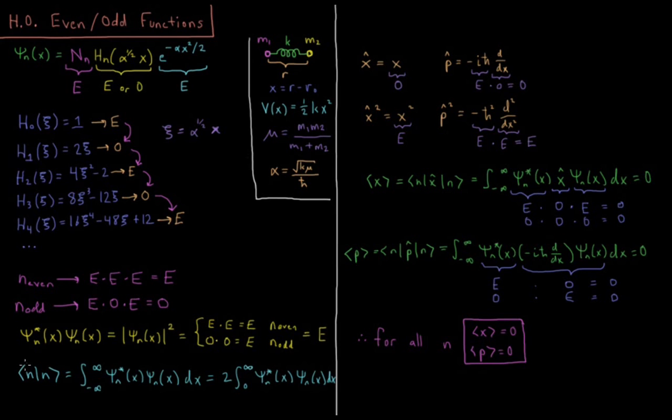So our normalization integral for any of these harmonic oscillator wave functions, the integral from minus infinity to infinity, psi star of n times psi n dx is equal to 2 times the integral from zero to infinity, psi n star psi n dx.